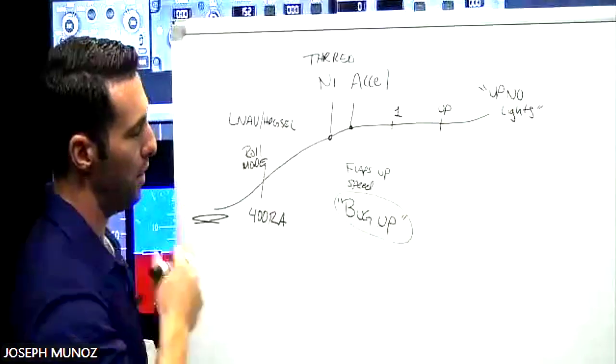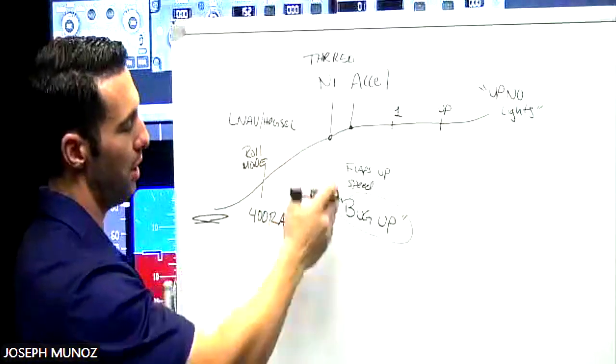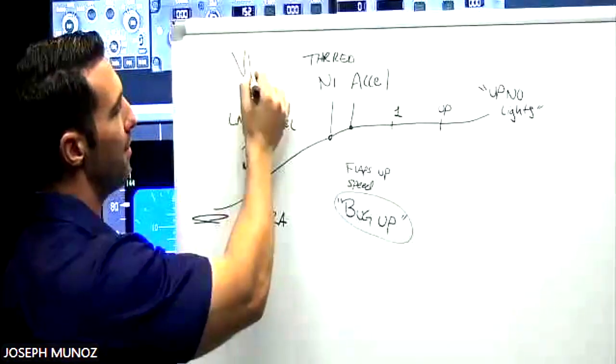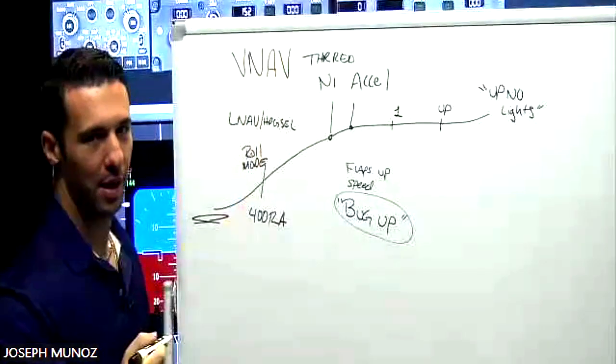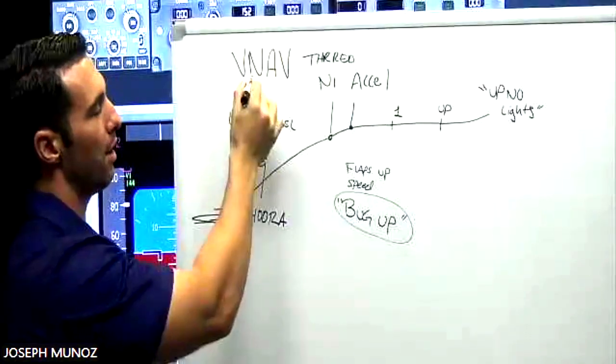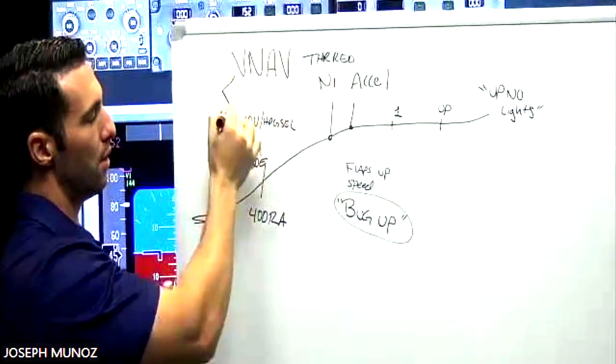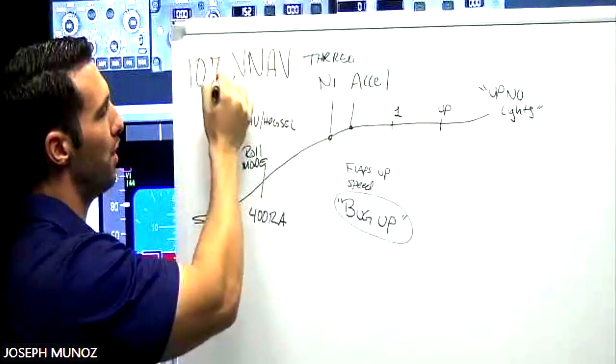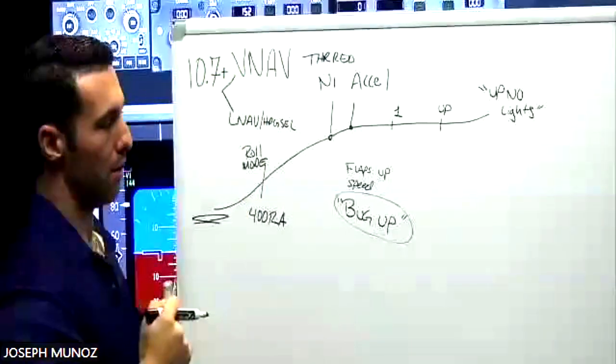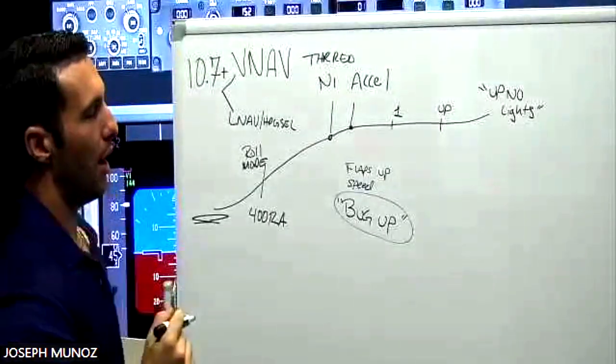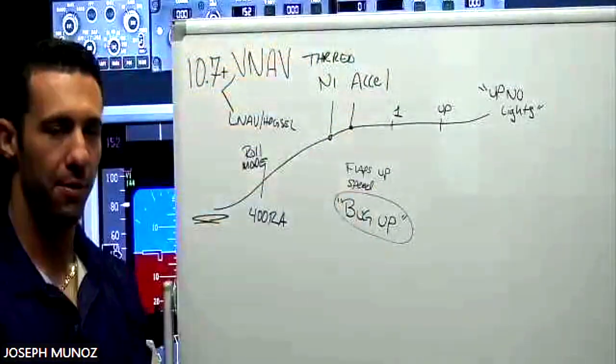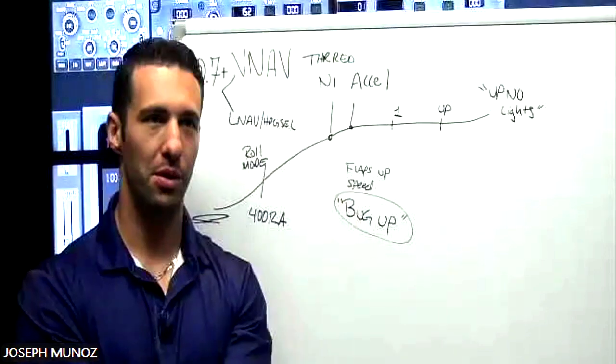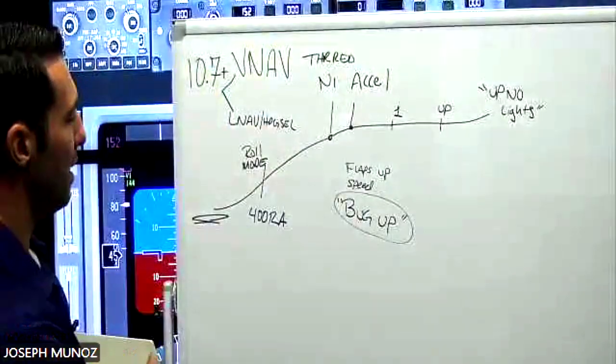Okay. Now, everything that I just shared with you here in terms of thrust reduction, acceleration, and bugging up will be done for you automatically if you have VNAV engaged. VNAV stands for vertical navigation. Remember that vertical navigation or VNAV as well as LNAV both can be engaged assuming the FMS software is at least version 10.7 or better. Now, I don't mention this first. I mention the old traditional way first because I want you to understand what the automation is doing. Because if the automation doesn't work and you don't really know what it does for you, then you're left guessing.